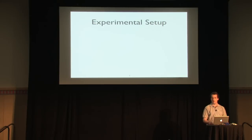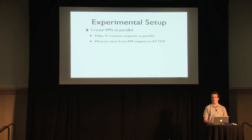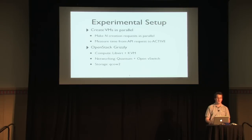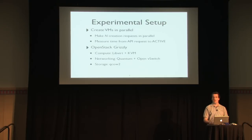The experimental setup: we're measuring the time to create virtual machines in parallel. We make N creation requests in parallel — hitting the API server with N requests — and measure the time from the API request to the virtual machines being active. The platform is Grizzly, compute backend is libvirt plus KVM, networking is Quantum with Open vSwitch, and the storage backend is QCOW2.